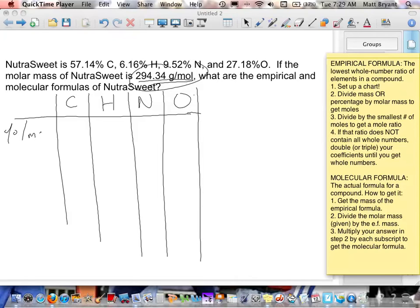Just as before, the first row is going to be the percentage or the mass. And this information, we can just copy from up above. 57.14 for carbon, 6.16 for hydrogen, 9.52 for nitrogen, and 27.18 for oxygen.